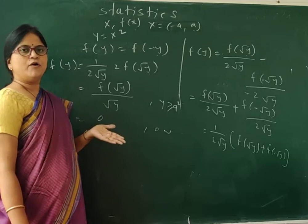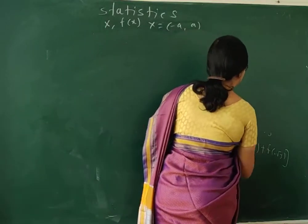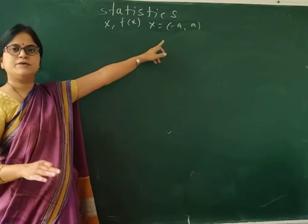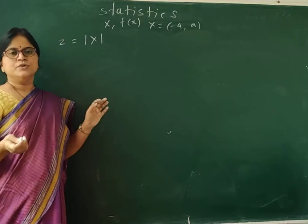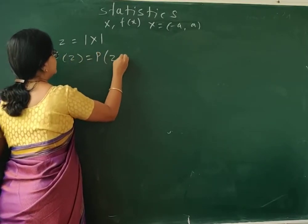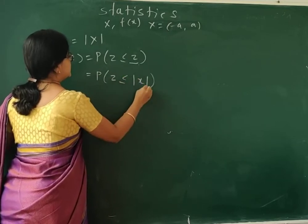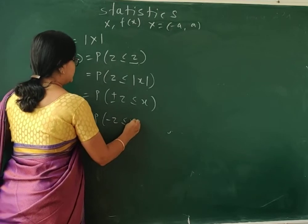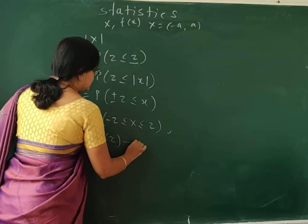Similarly, we can find the distribution of Z = |X|. If X has range −x to x, we find the distribution function of Z. The CDF is F_Z(z) = P(Z ≤ z) = P(|X| ≤ z) = P(−z ≤ X ≤ z). By the property of the distribution function, this equals F(z) − F(−z).